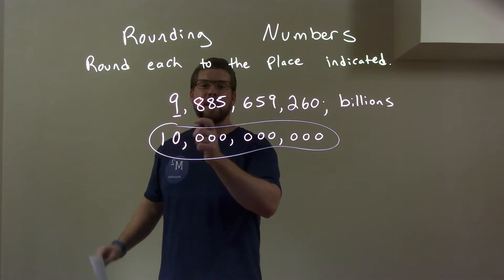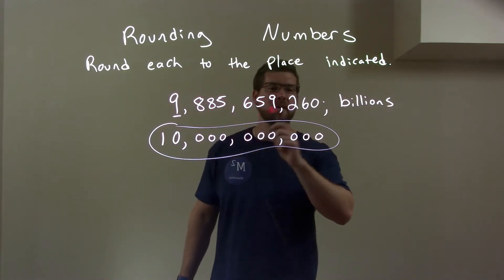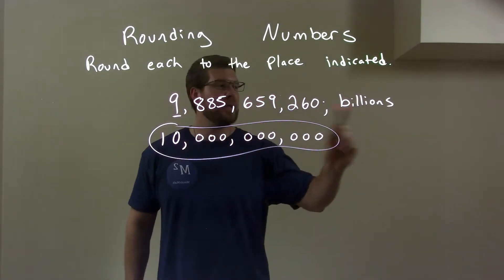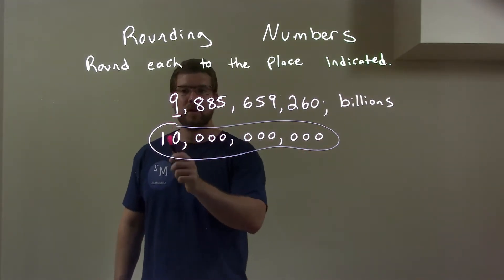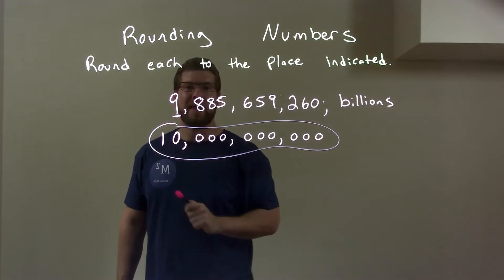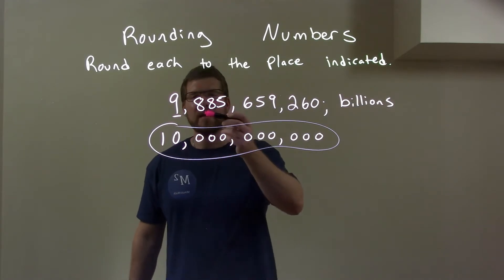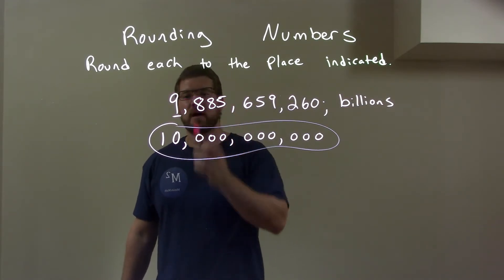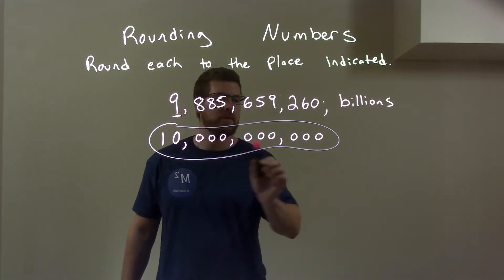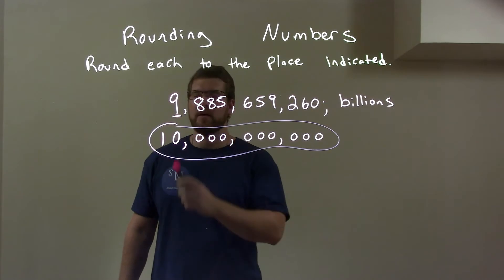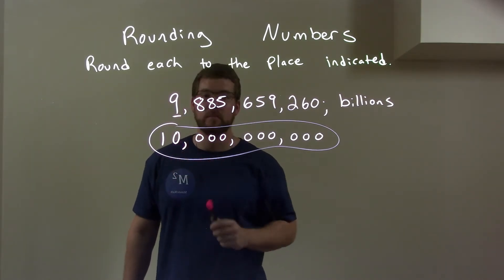Quick recap: We're given 9, 8, 8, 5, 6, 5, 9, 2, 6, 0, and we're rounding in the billions. Since we're rounding in the billions, I marked the billion mark right there on that 9. Then I look to the right — 8 causes the 9 to round up, making it a 10. The rest becomes 0. Our final answer is 10 billion.